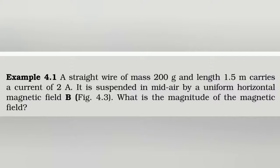A straight wire of mass 200 grams and length 1.5 meters carries a current of 2 amperes. It is suspended in midair by a uniform horizontal magnetic field B. What is the magnitude of the magnetic field?